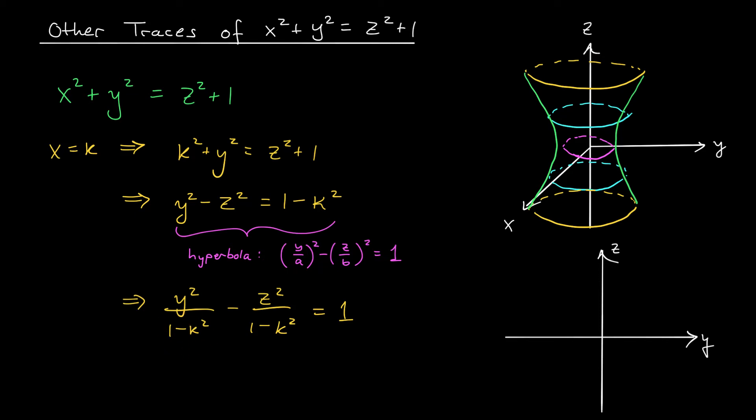that is, when k is between -1 and 1, this is a hyperbola that opens in the y direction, according to what we just discussed. So for small values of k, we get these hyperbolas opening in the y direction.